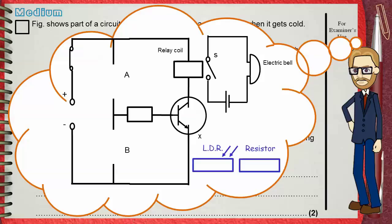But what is placed in Gap A and what is placed in Gap B? Remember again the three connections of the transistor: the collector, the base, and the emitter.